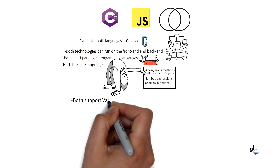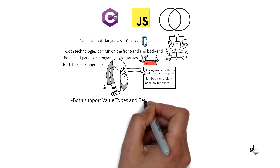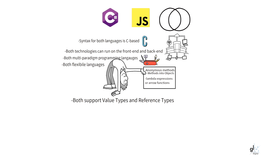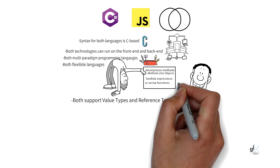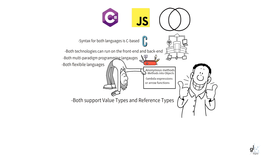Both languages include the concepts of value types and reference types. In JavaScript, primitives like number, string, BigInt, and boolean are value types, whereas arrays, functions, and objects are reference types. The size of value types are fixed and therefore stored on the stack, making them more efficiently managed in memory than reference types. Reference types are stored on the heap and their size is not fixed, so memory management for reference types is less efficient. In C#, data types like int, float, boolean, structs, and char are value types, while strings, classes, delegates, and arrays are reference types.